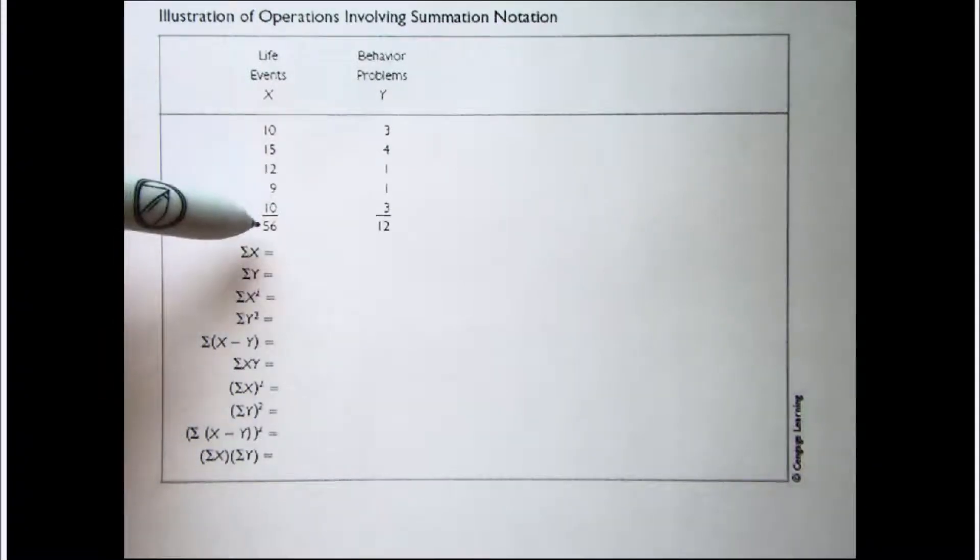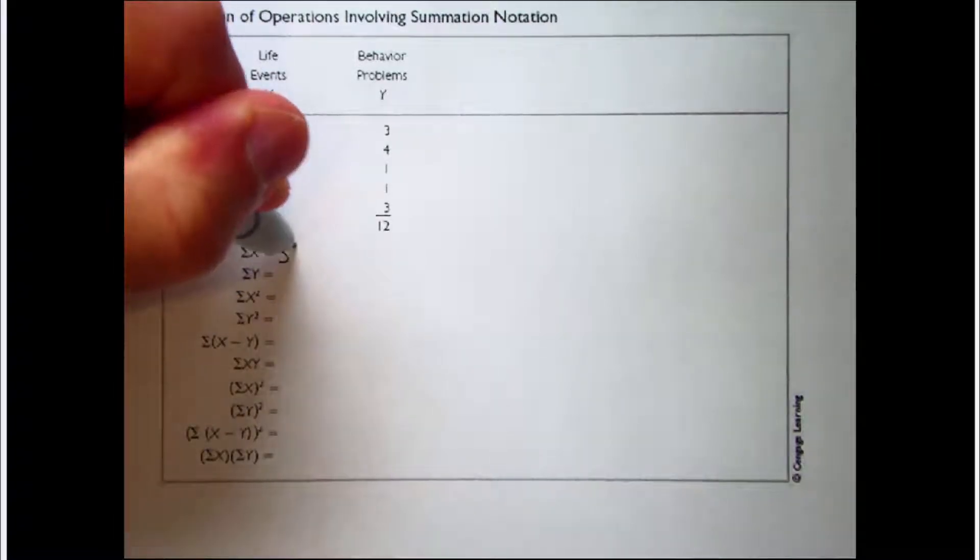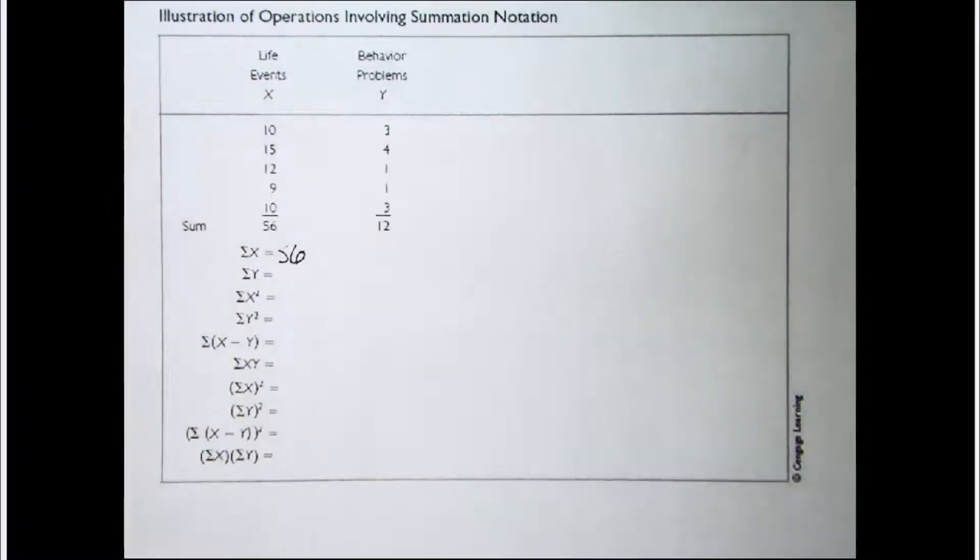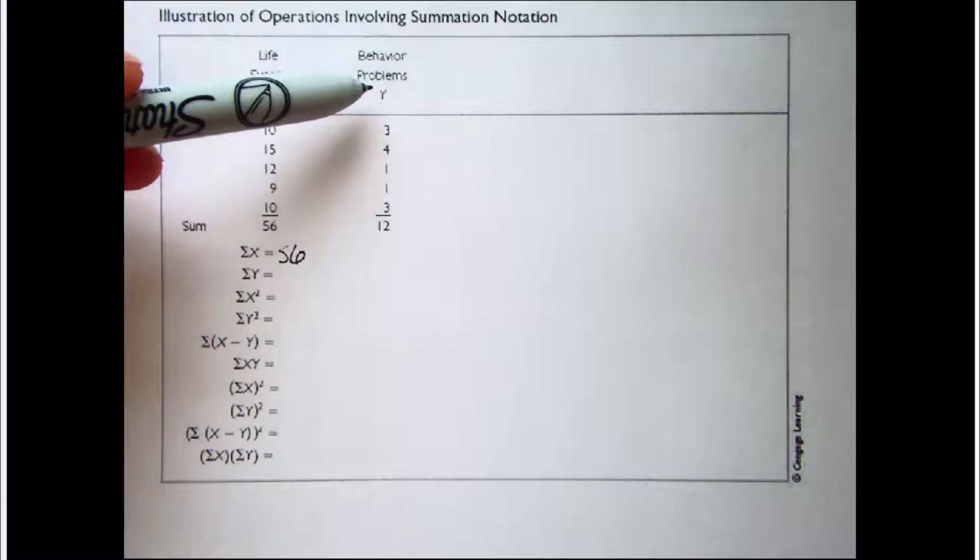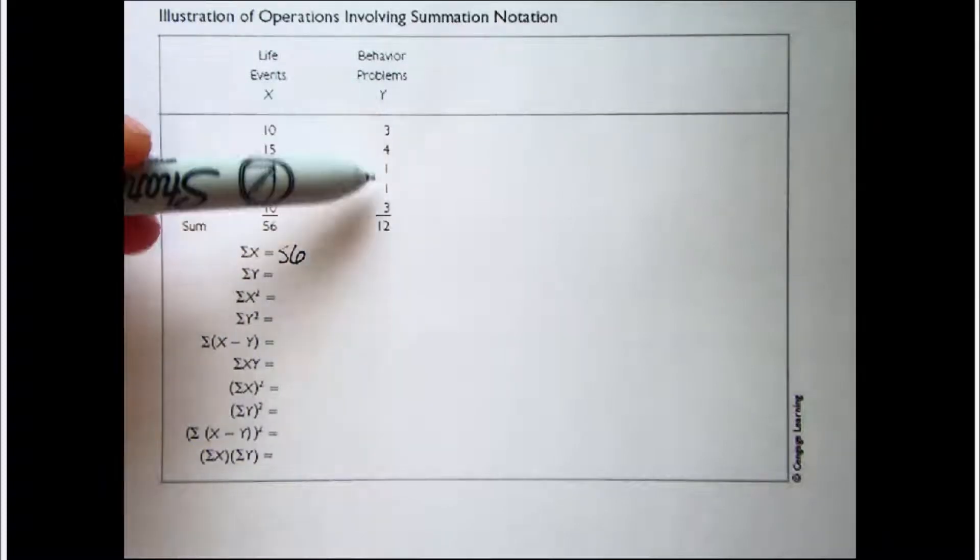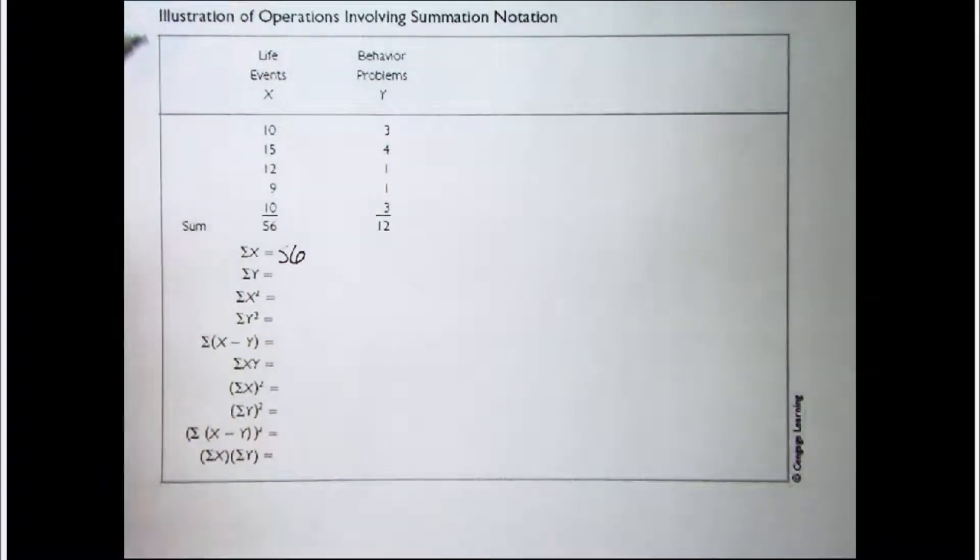Here's our X variable, and it's actually already summed up for us. So that one's pretty easy: 56. The next one as well is already done for us. Sigma Y, that's the sum of Y. Do we have a column labeled Y? We do. We should sum it up. All those values sum up to 12.